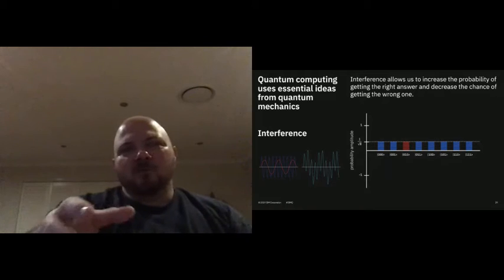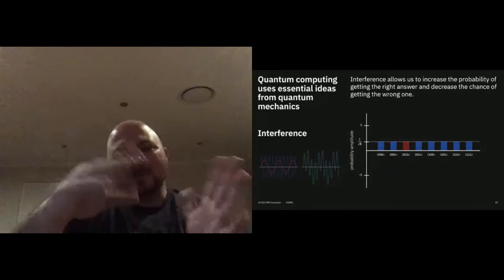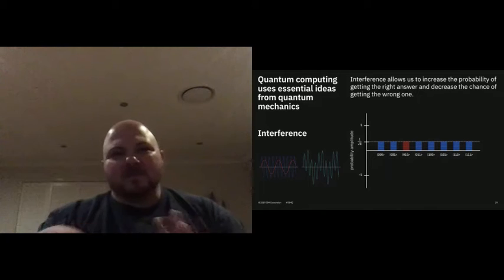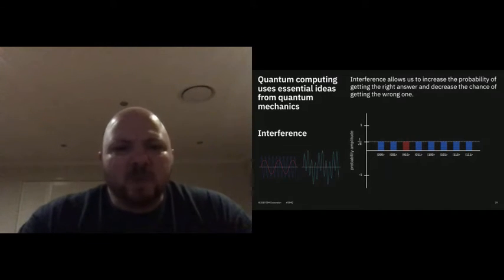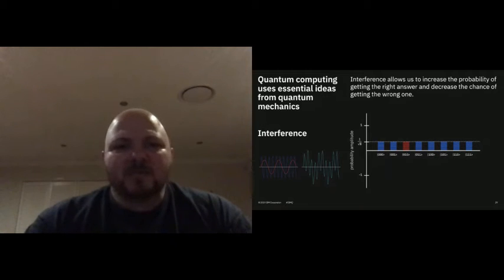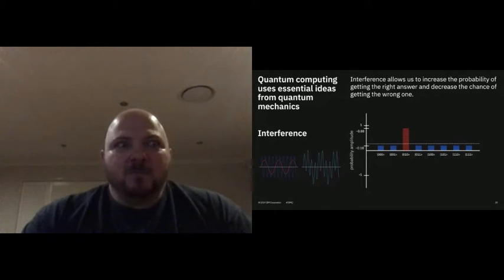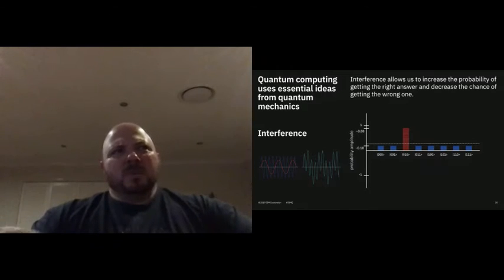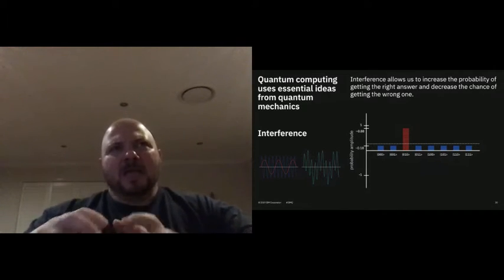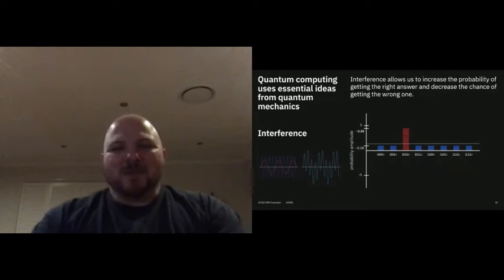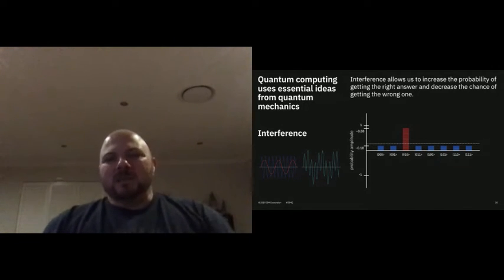Can I rotate the vector? Can I change the phase of it? I can encode all of this information into the qubit using gates to change those probability amplitudes. The idea of how a quantum algorithm works is that I want to manipulate the qubits so that I increase the probability of getting the right answer and decrease the probability of getting the wrong answer.